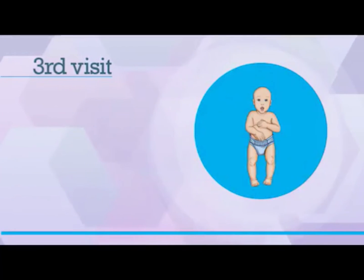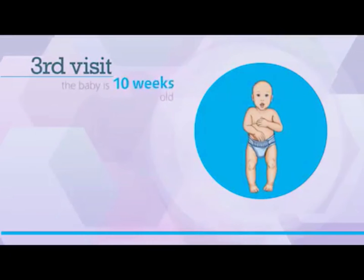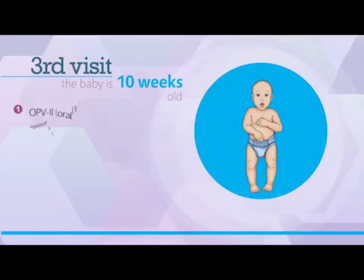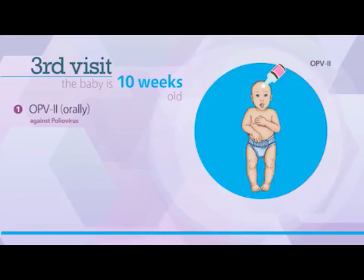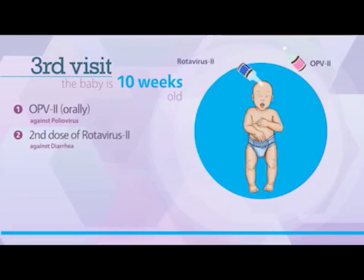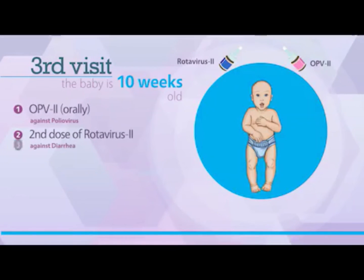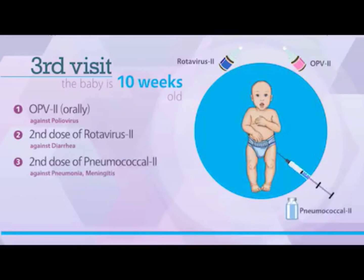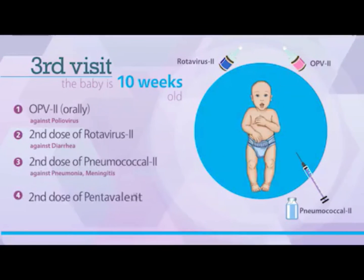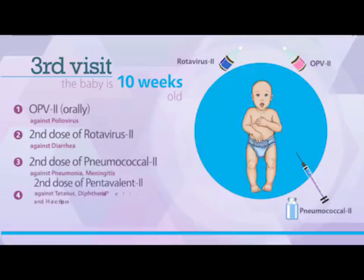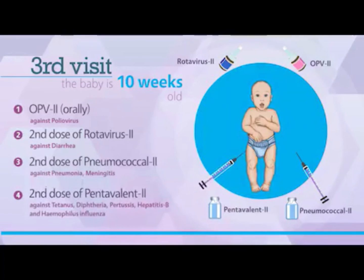The third visit is scheduled when the baby is 10 weeks old. On this visit, the second dose of OPV2 is given orally along with the second dose of rotavirus 2 vaccine, the second dose of pneumococcal 2 administered intramuscularly in the left thigh, and the second dose of pentavalent 2 administered intramuscularly in the right thigh.